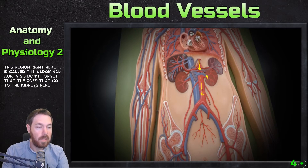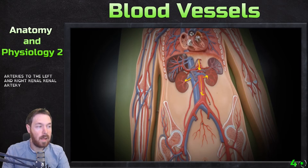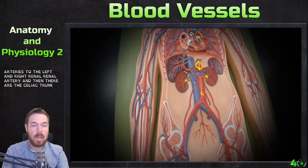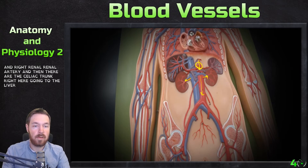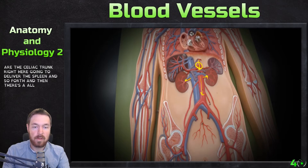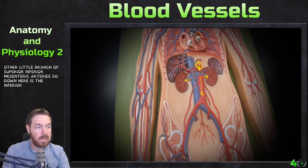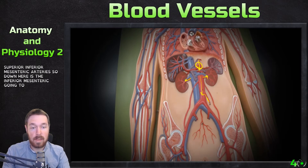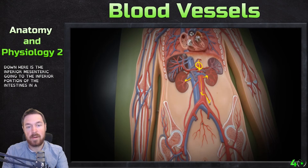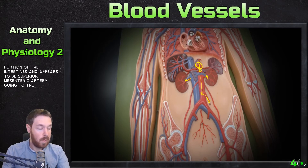The vessels going to the kidneys are called the renal arteries — there's a left and a right renal artery. Then there's the celiac trunk going to the liver, spleen, and so forth. Below that are the superior and inferior mesenteric arteries: the inferior mesenteric goes to the inferior portion of the intestines, and the superior mesenteric goes to the superior portions.